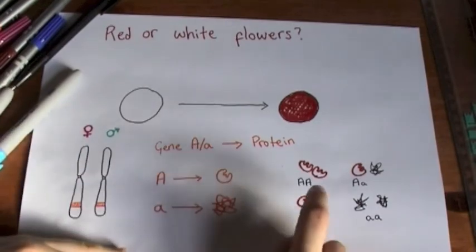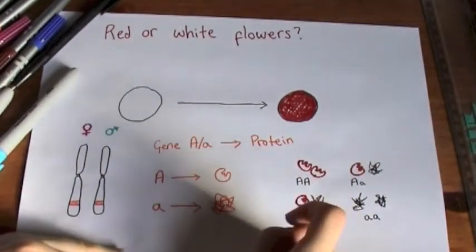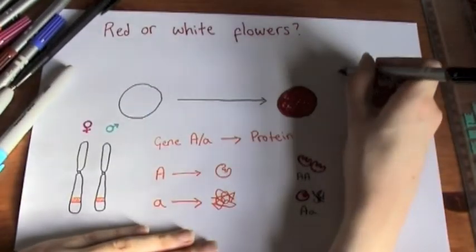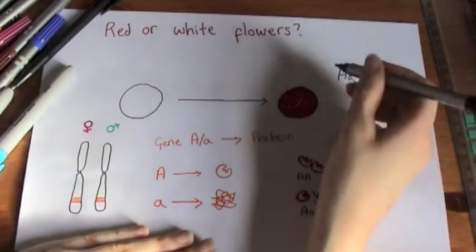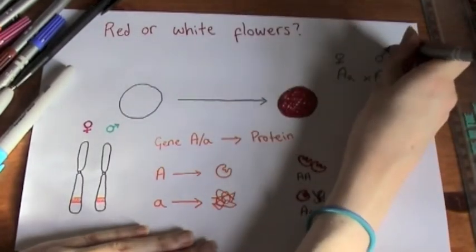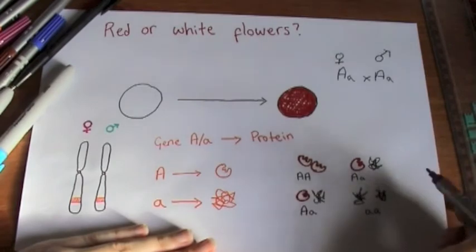So here's my beautiful, this is just a monohybrid cross. Say the parents are both heterozygous. This would be mum, and this would be dad. When we cross, we can have these versions.